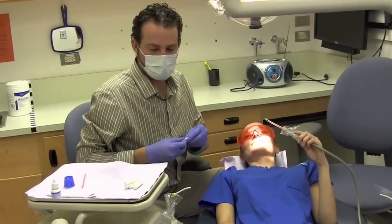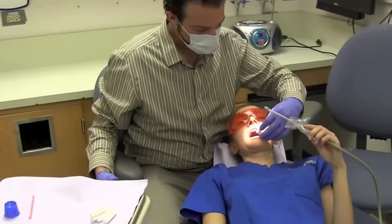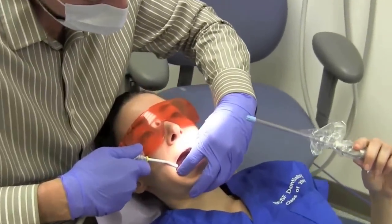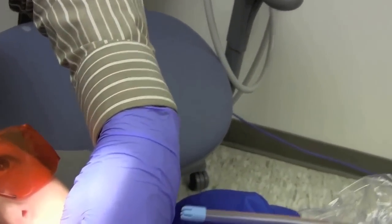We're going to take some cotton and isolate the area. We're going to be applying on to number 30, occlusal, first permanent molar. We have our air water syringe.